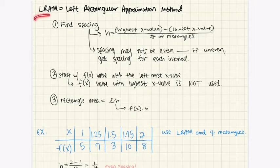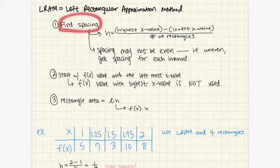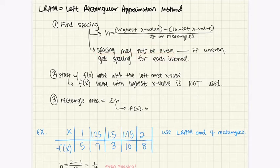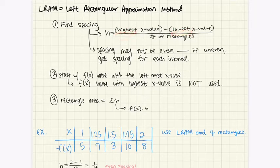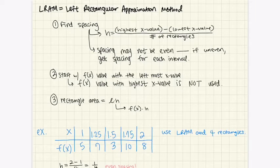The first one is LRAM — the Left Rectangular Approximation Method. First, you need to find the spacing, and you have to check whether the spacing is even or uneven. If it's uneven, you have to calculate the spacing for each interval. Spacing is defined as h. For even spacing, h equals the highest x value minus the lowest x value, divided by the number of rectangles. The number of rectangles will always be given in the problem.